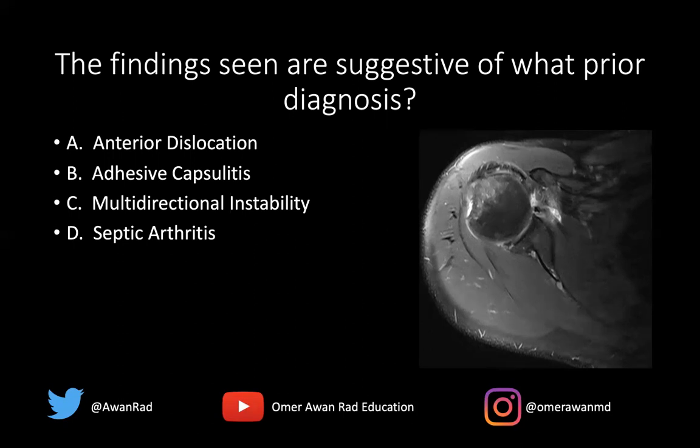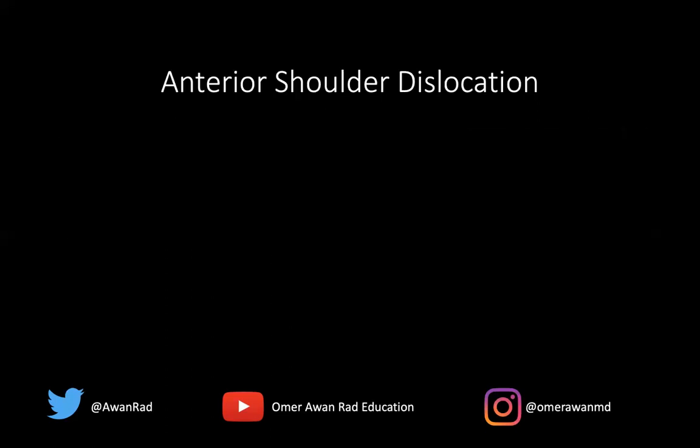Septic arthritis would present with full-blown infection, subchondral erosions, maybe a complex joint effusion, and bone marrow edema on both sides of the joint. We certainly don't see that here. So the best answer here would certainly be an anterior dislocation.